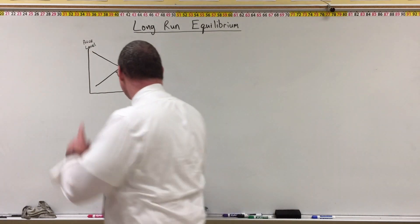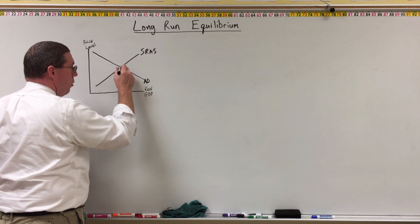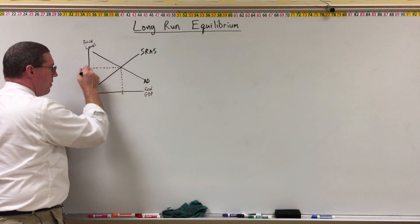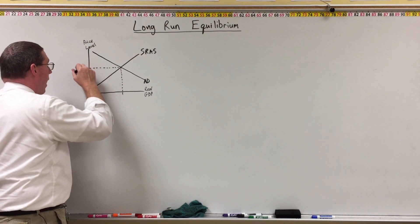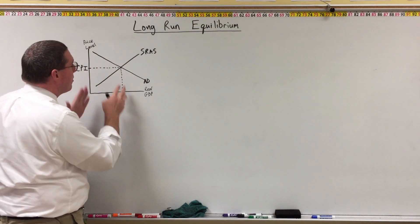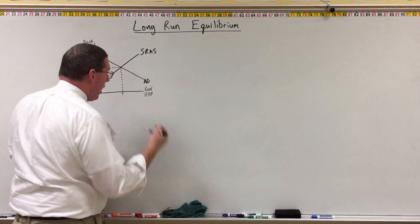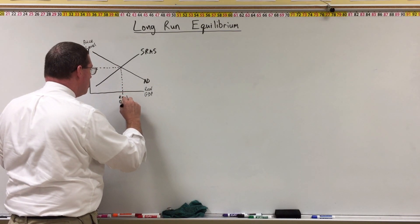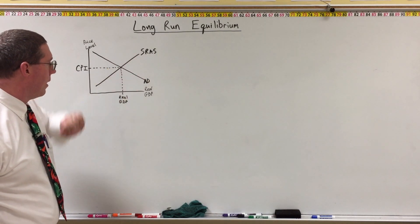We learned that where these two curves intersect — just like a product market graph — where they intersect, we have equilibrium in the aggregate market. That determines the price level, which we call the equilibrium price level in the economy, which we call the actual CPI. That's the inflation rate, and the quantity that is actually produced — the actual amount of output produced in the entire economy, which we call real GDP. Actual output, real GDP, is determined by the intersection of short-run aggregate supply and aggregate demand.